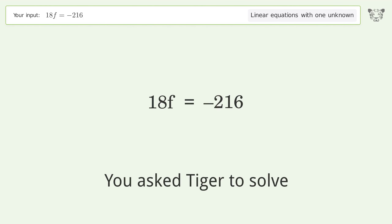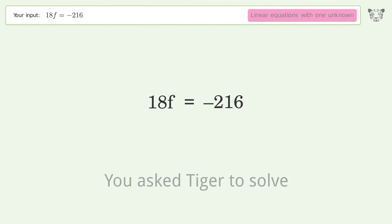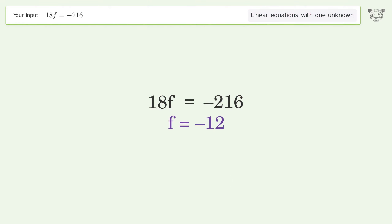Tiger is asked to solve a linear equation with one unknown. The equation is 18f = -216, and the final result is f equals negative 12.